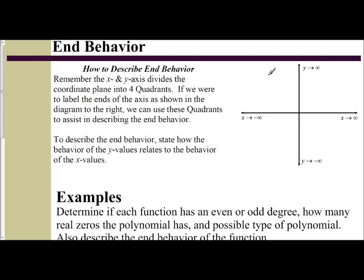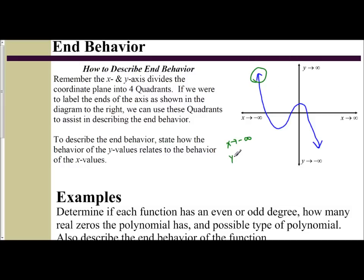To describe the end behavior, you just look at which quadrant the arrows are pointing in. So if I look at this example, I see that since this arrow is in the top left quadrant — quadrant 2 — it's in the quadrant where x approaches negative infinity while y approaches positive infinity. On the right side, it's in the quadrant where x approaches positive infinity while y approaches negative infinity.